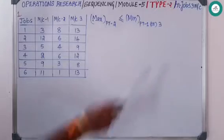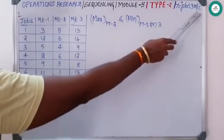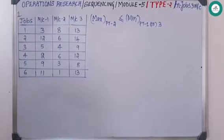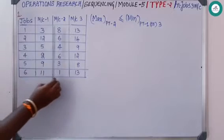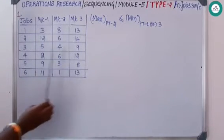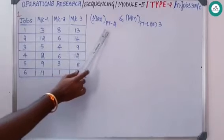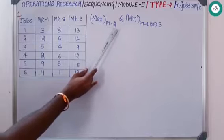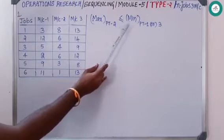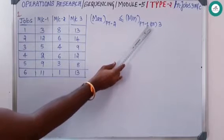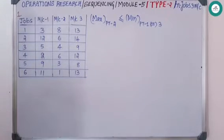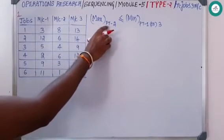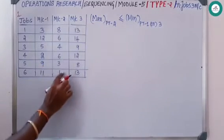Coming to the Type 2 problem: n jobs and three machines in sequencing. We have six jobs and three machines. When this is given, you need to check the condition to proceed: the maximum processing time on machine two should be less than or equal to the minimum processing time on machine one or machine three. We check the maximum processing time on machine two, which is eight.